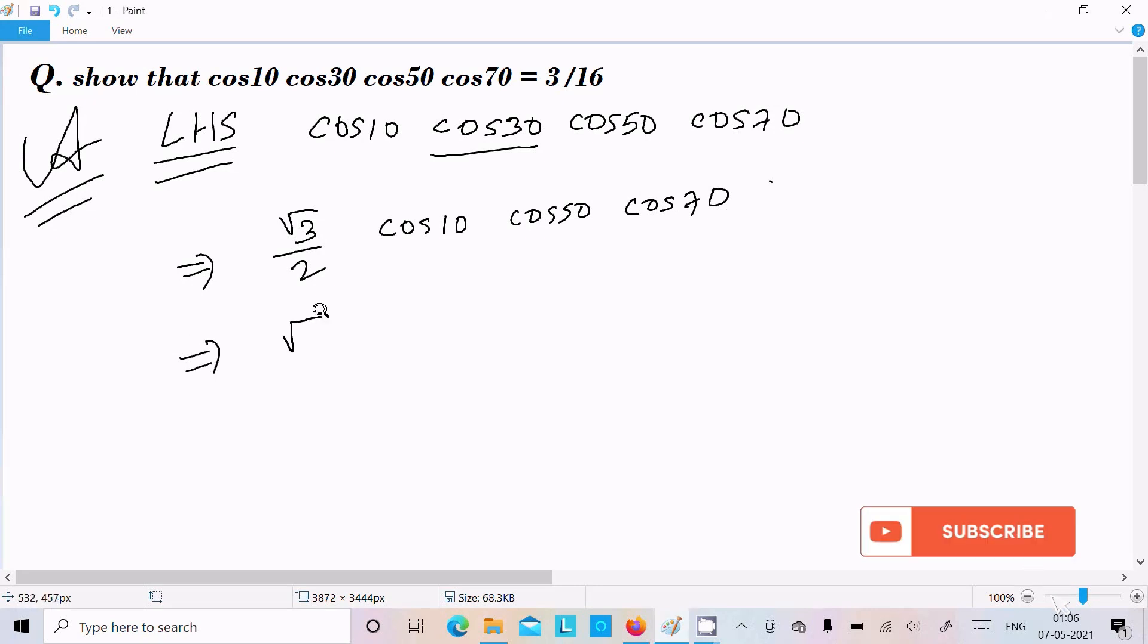Now in the numerator I'm going to multiply with 2, and we can do also with the denominator. So here cos10 cos50 cos70.